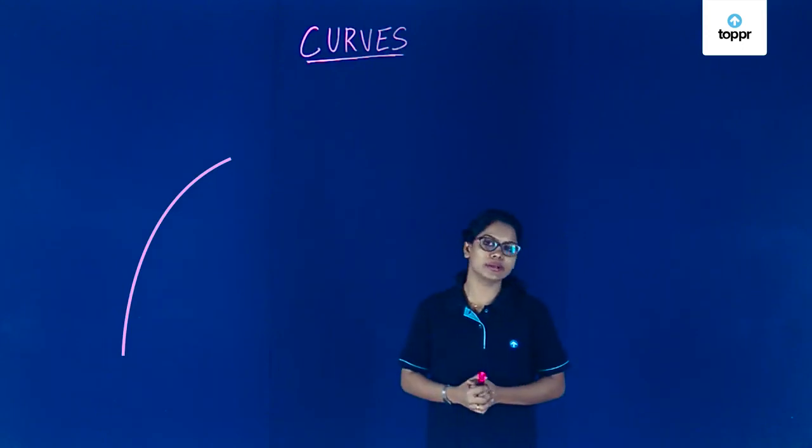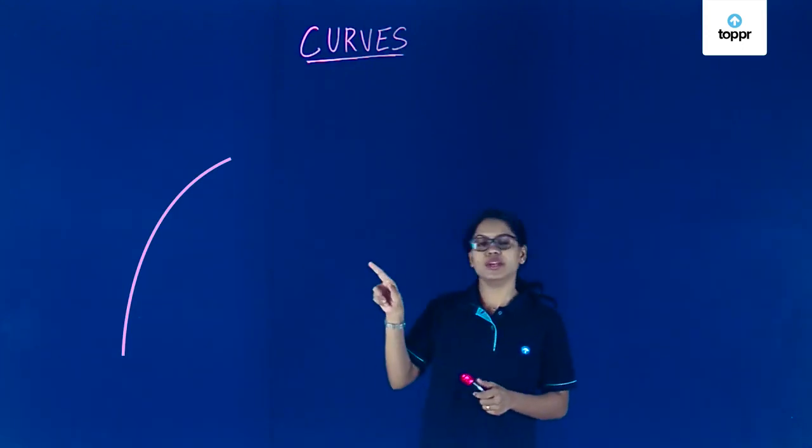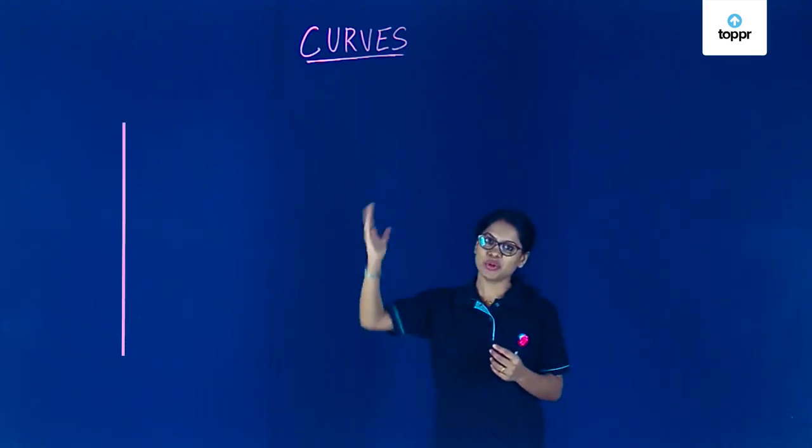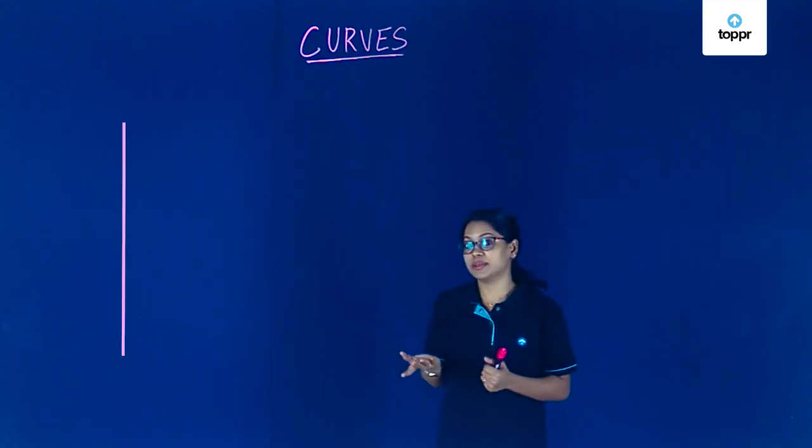Let's now just look at one curve in particular. Now this particular curve, it's not straight so we'll call it a curve. Now what if I straighten it a little? What do you get? This is nothing but a line segment.